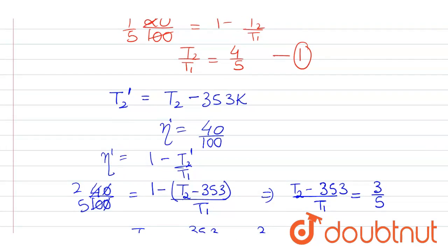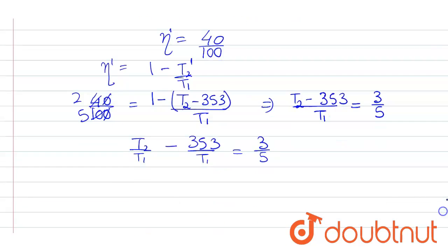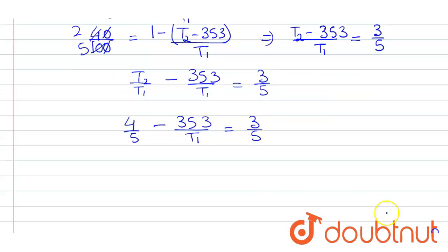Now putting the value of T2 upon T1 from equation first, which is 4 upon 5. So 4 upon 5 minus 353 upon T1 equals 3 by 5. Now on rearrangement, we get 353 upon T1 equals 1 upon 5.